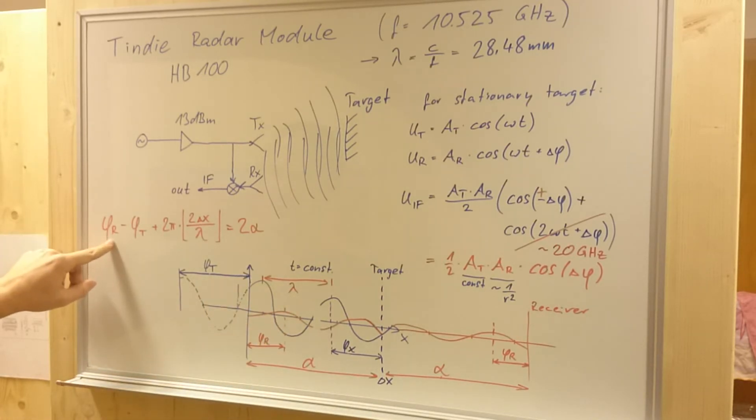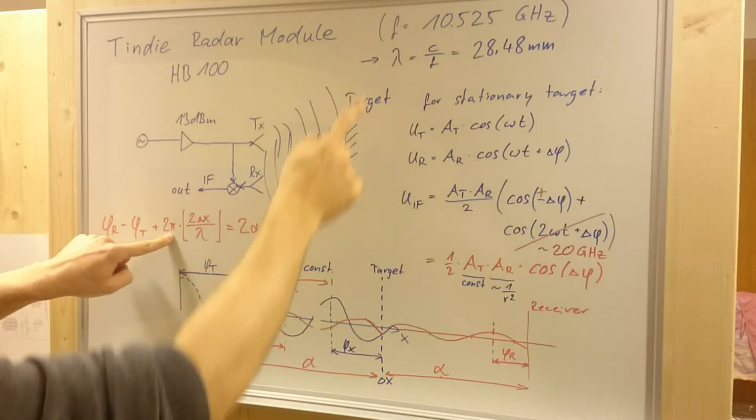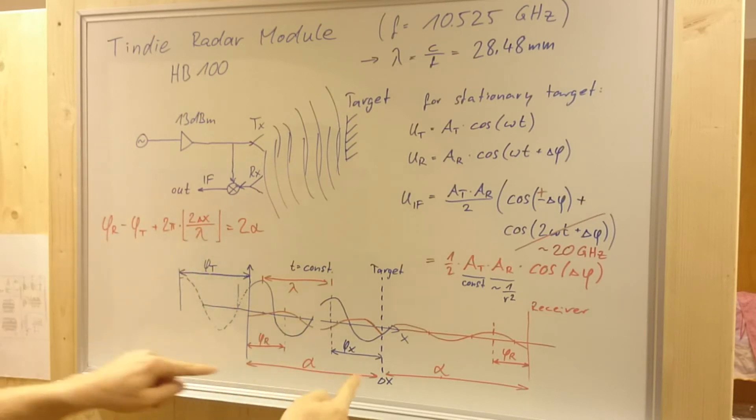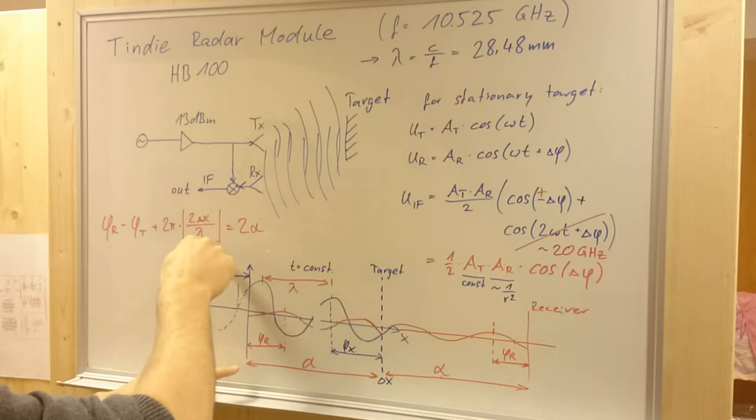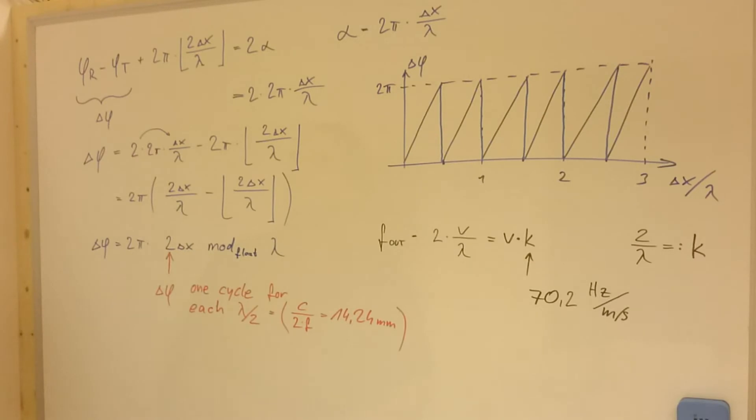When we do the equation, we have here receiving phase minus the transmitting phase plus 2 pi radians times the number of complete wavelengths. So, this is 2 times delta x divided by lambda, and we round it off to an integer. This is equal to the double local phase.